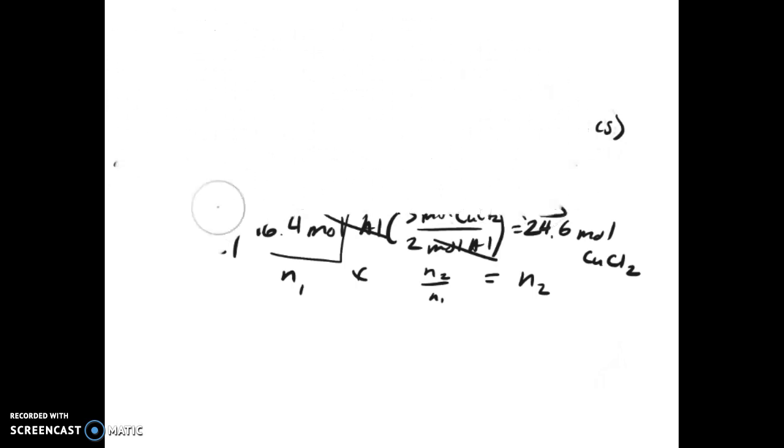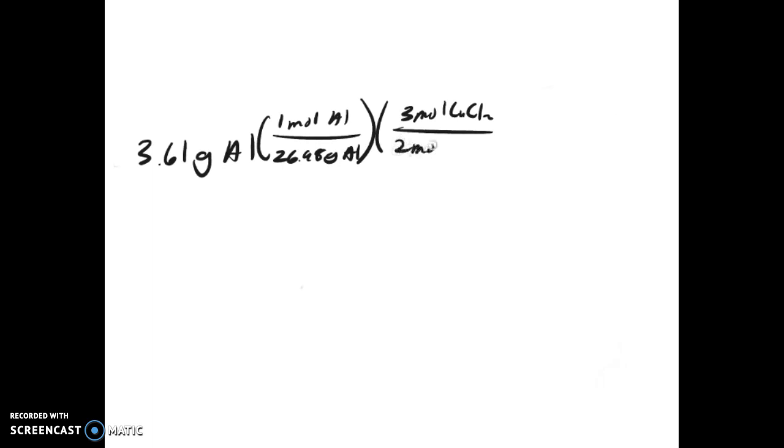Now you can always go one step further with this to figure out mass in grams conversions. What that basically means is if you have 3.61 grams of aluminum, you can take it times, for every one mole of aluminum there are 26.98 grams of aluminum, which is the molar mass from the periodic table, times your mole ratio again, times there are 63.55 grams of copper in every one mole, which tells you that there are 12.8 grams of copper.